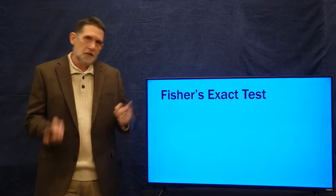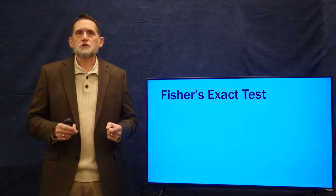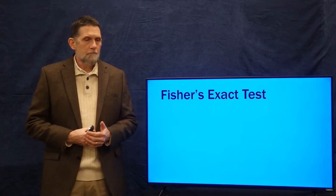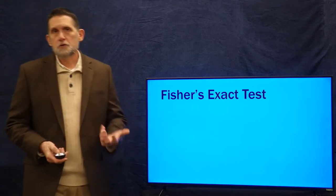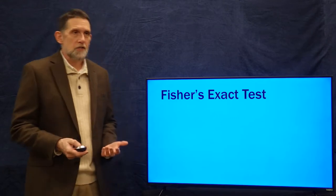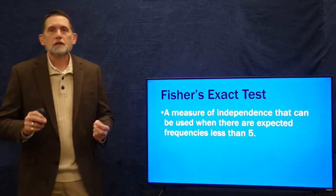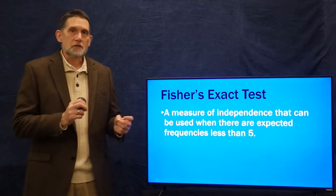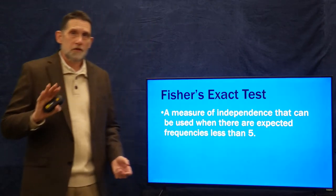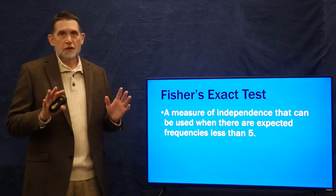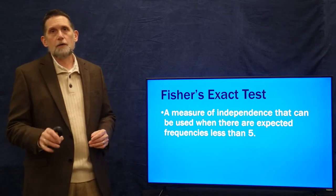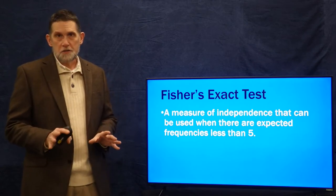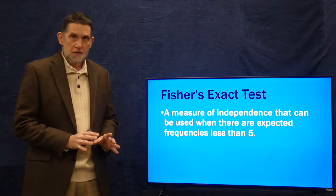We're going to begin with something we've already mentioned, which is Fisher's Exact Test — from R.A. Fisher, who was the inventor of ANOVA. This is a test you use in addition to chi-squared, or as another tool in the chi-squared toolbox, that allows you to do a chi-squared kind of analysis but where there are expected frequencies less than five. One of the requirements for chi-squared is that expected frequencies have to be greater than one and should not be less than five. Fisher's Exact Test lets you do an analysis when expected frequencies are less than five.